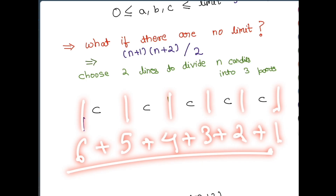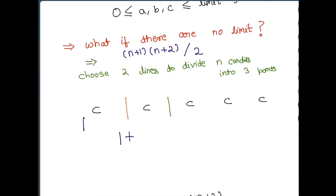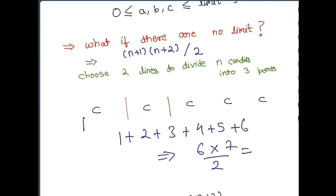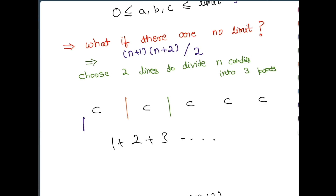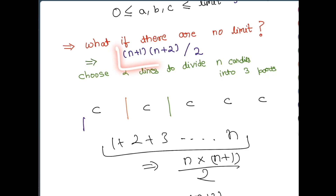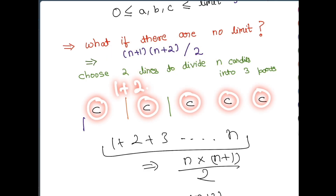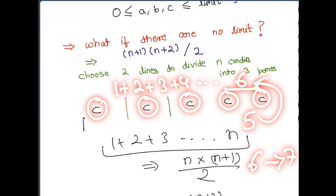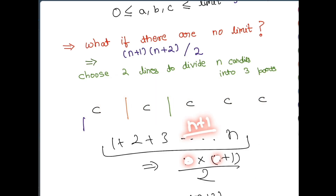Do you see the formula? It's 1 + 2 + 3 + 4 + 5 + 6, which equals 6 * 7 / 2. The general formula for 1 + 2 + ... + n is n * (n+1) / 2. Since we have 5 candies but count up to 6, the formula becomes (n+1) * (n+2) / 2. So for n=5: (5+1) * (5+2) / 2 = 6 * 7 / 2 = 21 ways to distribute 5 candies among 3 children without any limit.